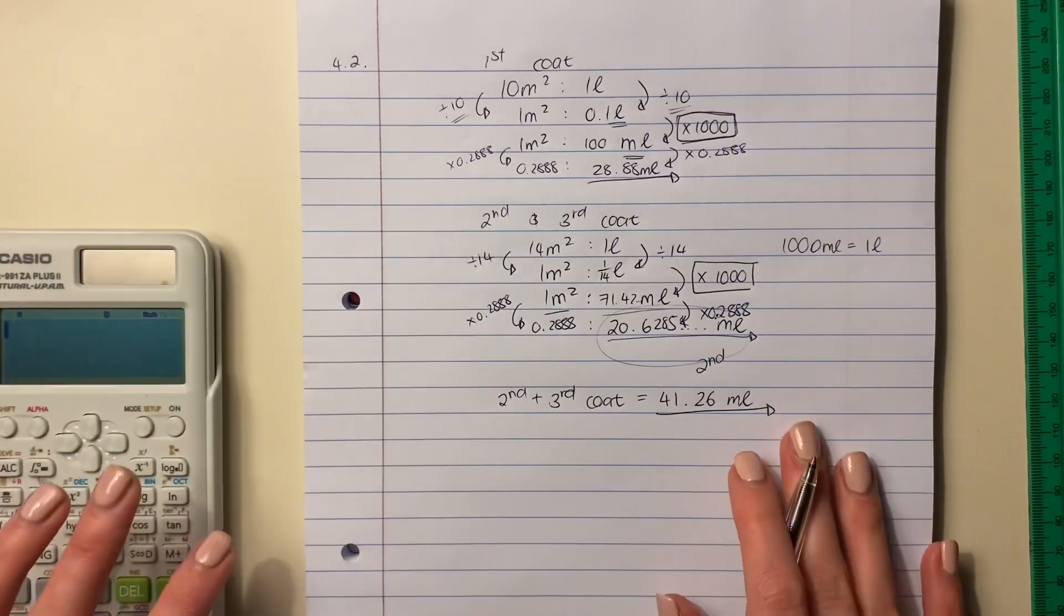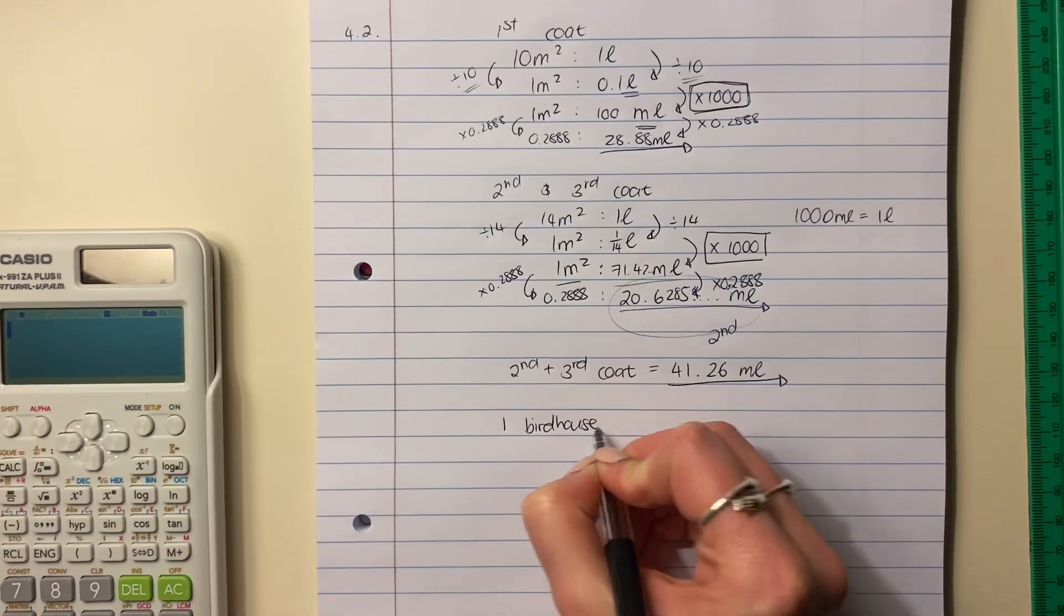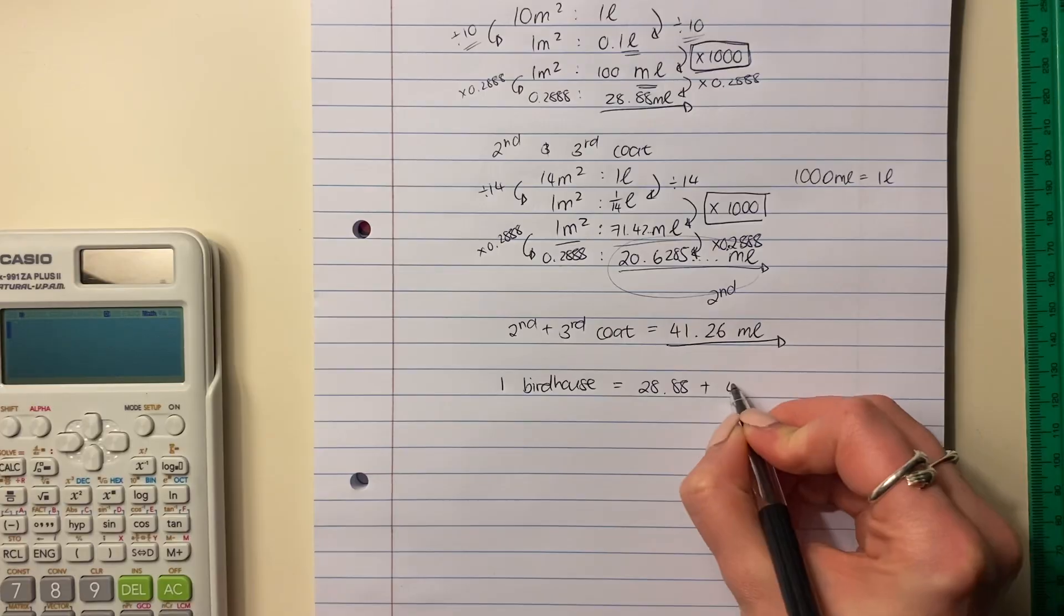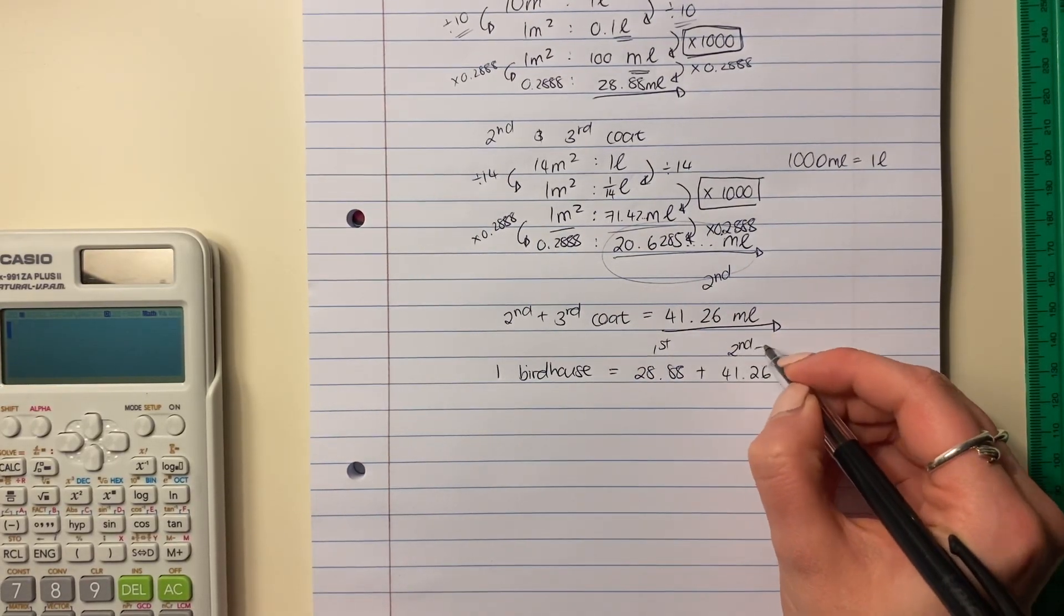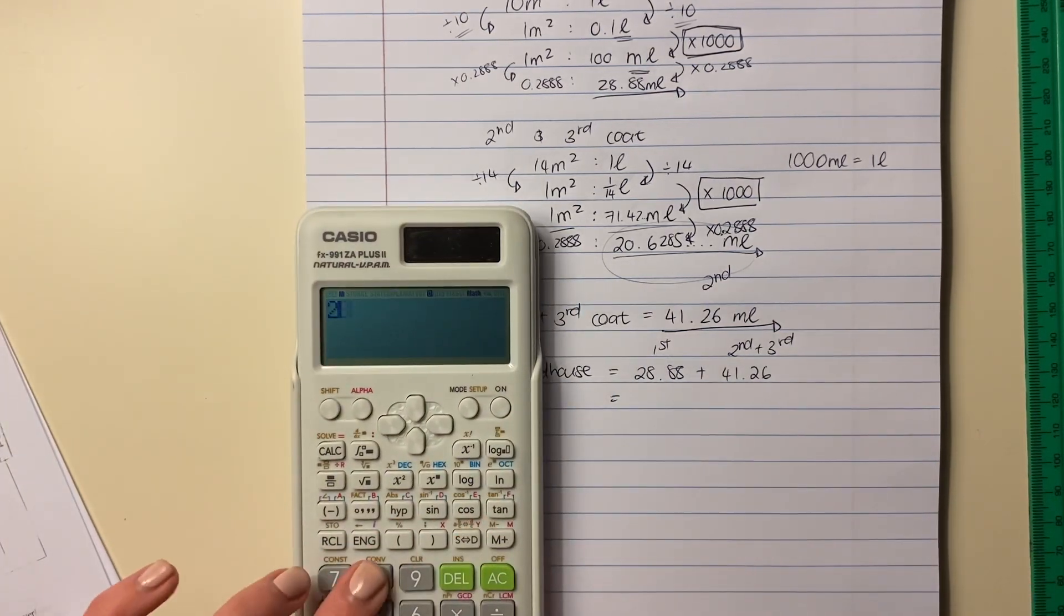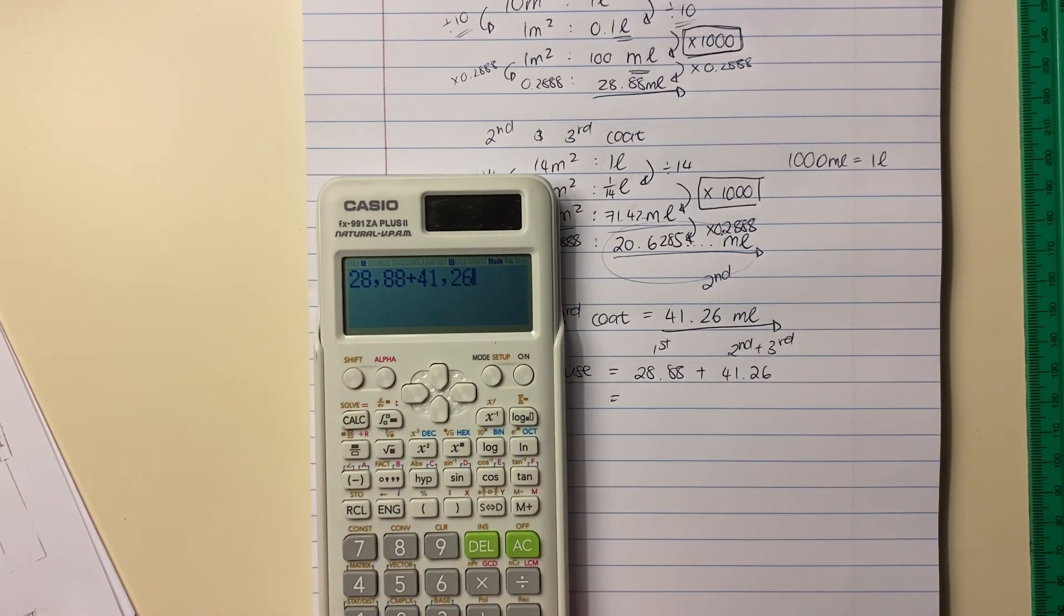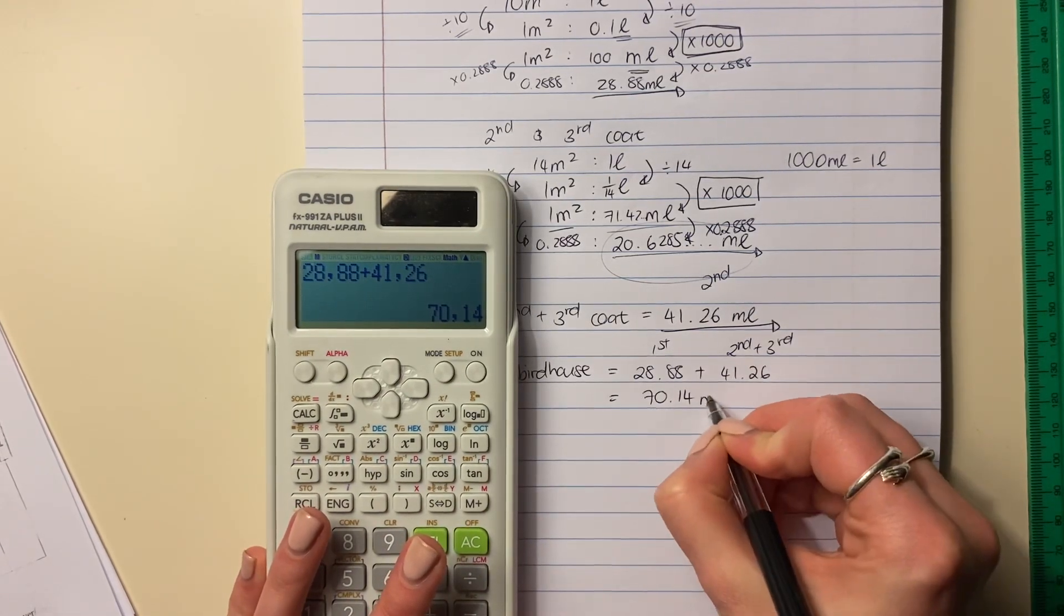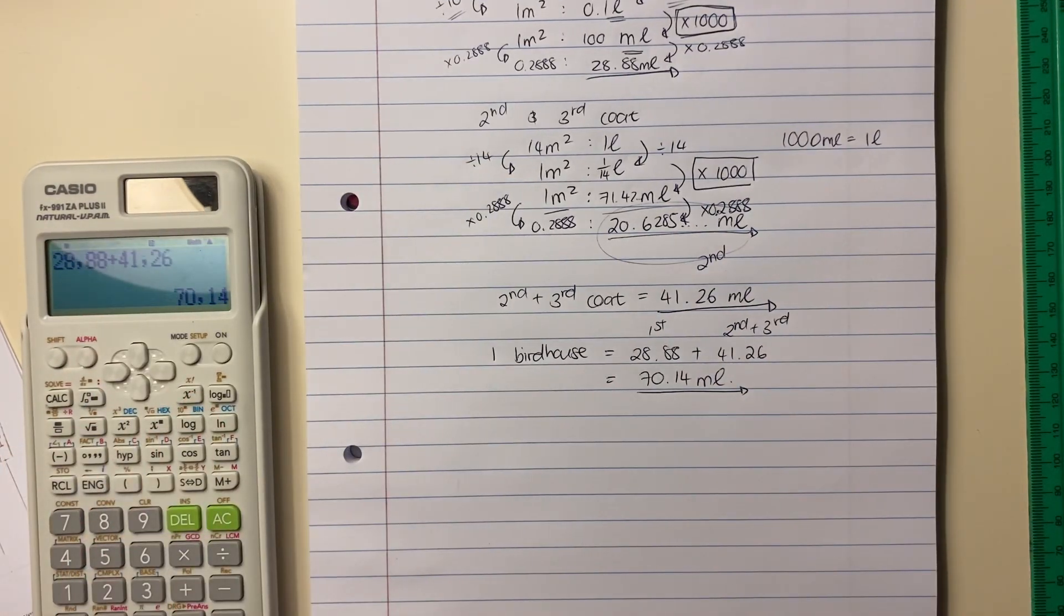So now let's say, well, then how much is one birdhouse? It's going to be the 28.88 plus the 41.26, because that's the first coat and that's the second and third coat. So you must work carefully here. So let's add these all together. 28.88, there's my first coat, plus 41.26, that's my second and third coat. So each coat is going to take me that many milliliters. So that's one birdhouse.